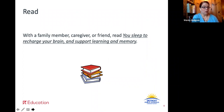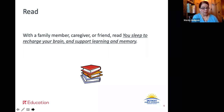Brainwaves are the electrical activity our brains produce. They change in height and number depending on what we are doing. Scientists have categorized sleep into two states called non-REM and REM, which repeat every 90 minutes several times during the night. Non-REM can also be called NREM and further divided into stages S1, S2, S3, and S4.